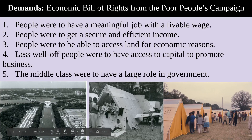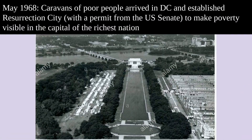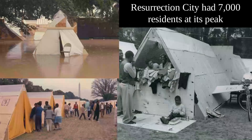They organized Resurrection City. You can see right here on the mall they have lots of tents camped out and people moved in. Caravans of poor people arrived in D.C. from all over the South and other parts of the North and established Resurrection City. The goal was to dramatize and make very visible poverty in the richest nation's capital. They actually did get a permit from the U.S. Senate, so they weren't illegally occupying the land. Resurrection City had 7,000 residents at its peak — this was a mass campaign.